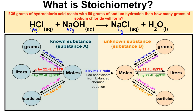Or we can calculate what is called a theoretical yield using stoichiometry — a mathematical process to figure out how much table salt will be produced if we react 35 grams of hydrochloric acid with 50 grams of sodium hydroxide. This flowchart helps us do this type of problem. The two known substances are in grams, and the unknown substance we want to find is also in grams, so we'd run the process through the flowchart to get the answer.